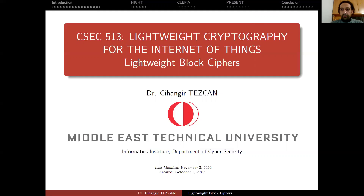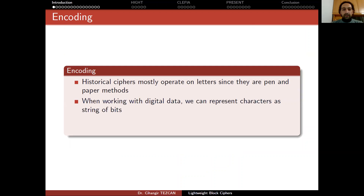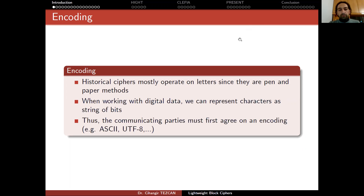This encryption will be performed between devices, so in order for that the devices should be talking the same language. And actually this is done by encoding. Historical ciphers mostly operate on letters since they are pen and paper methods, but now we are living in a digital world. When working with digital data, we can represent characters as strings of bits, and if you gather eight bits together, we call it a byte. The communicating parties must first agree on an encoding so they will be speaking the same language.